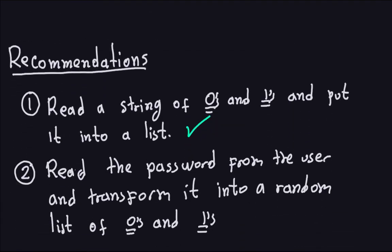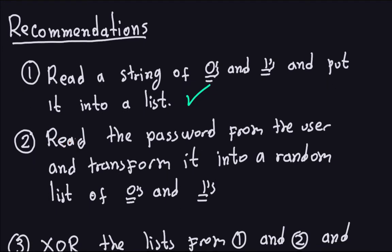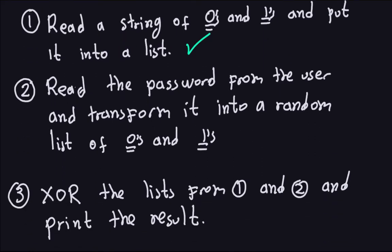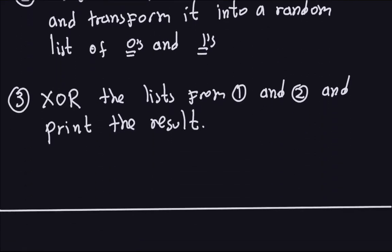So we're going to look at the second part: read the password from the user and transform it — the important part — into a random list of zeros and ones. Remember, that random list has to have a length equal to the length of zeros and ones that the user input from step one. That's very important. Let's do the second part.